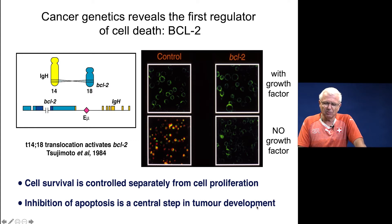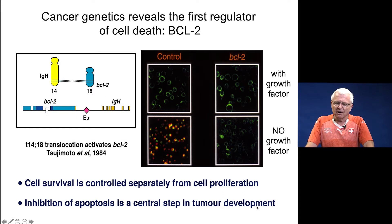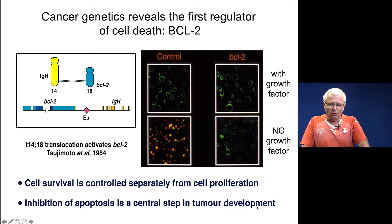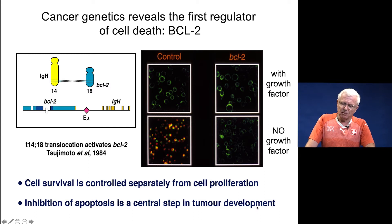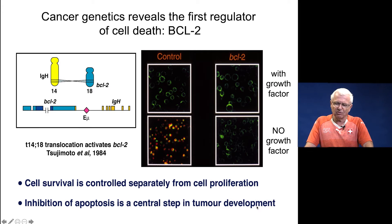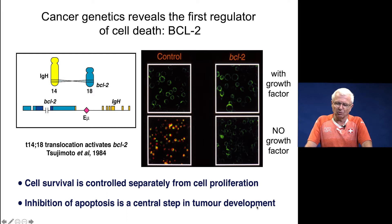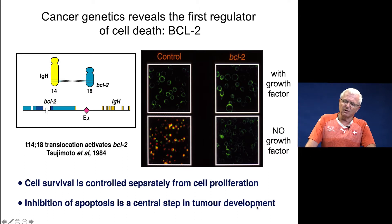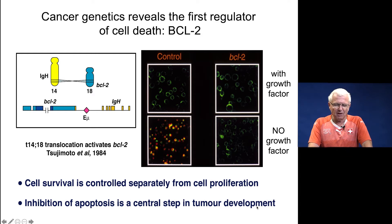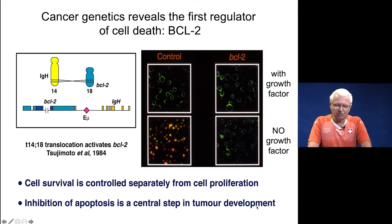David Vaux at WEHI, working with Suzanne Cory and Jerry Adams, discovered the function of BCL2. Until then, all oncogenes caused cells to divide when they didn't need to. BCL2 does not do that — instead it keeps cells alive when they would normally undergo cell death. Cells dependent on interleukin-3 survive when IL-3 is present but die when deprived of it; cells overexpressing BCL2 continue to live even without IL-3. This showed that cell survival is controlled genetically separately from cell proliferation, and for the first time demonstrated that inhibiting apoptotic cell death can contribute to tumor development.